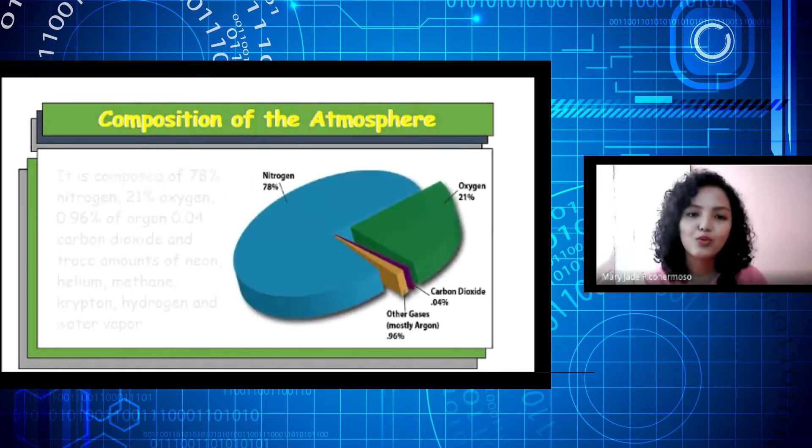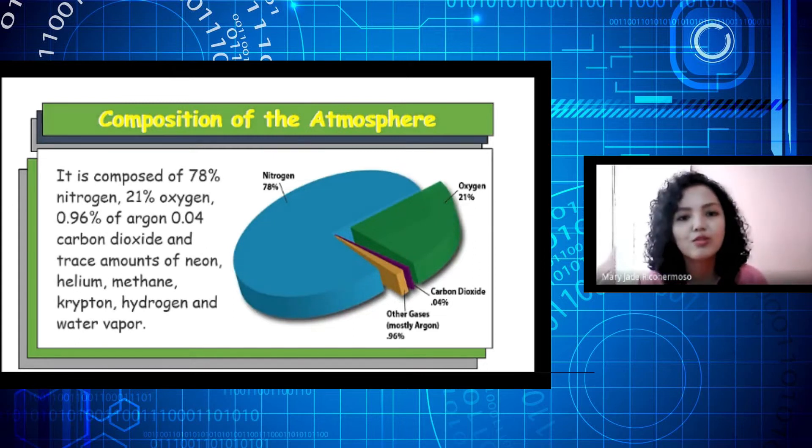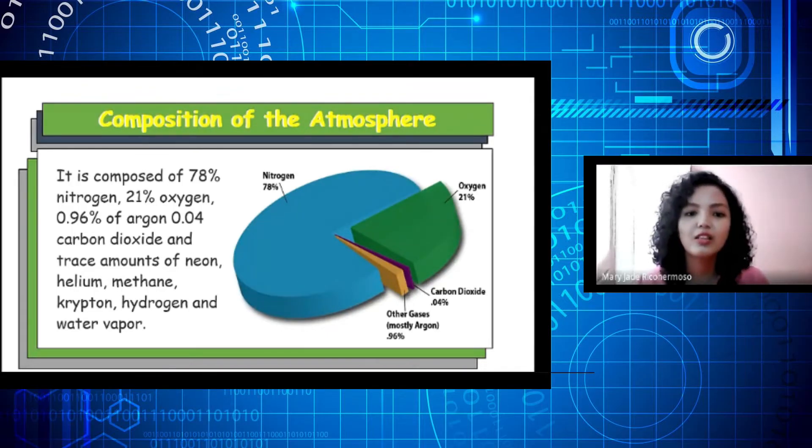Why do you think so? Because it is composed of 78% nitrogen, 21% oxygen, 0.96% of argon, 0.04% carbon dioxide, and trace amounts of neon, helium, methane, krypton, hydrogen, and water vapor.